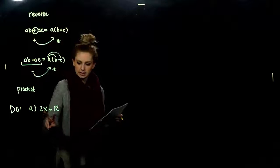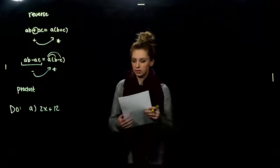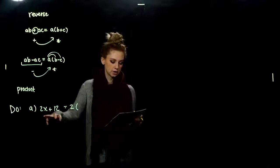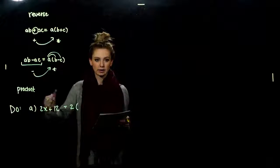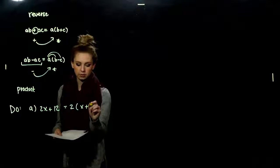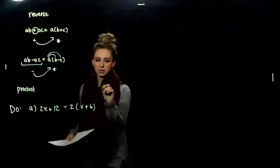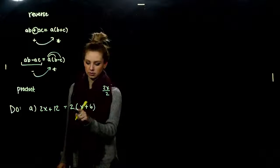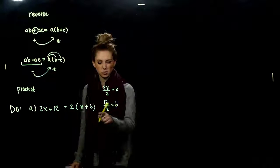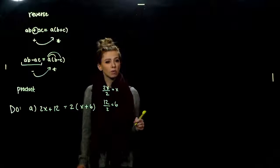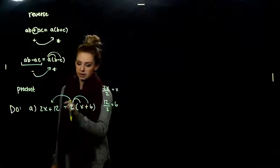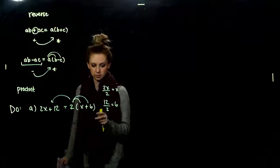To factor an expression is to find an equivalent expression that is written as a product. When things are being multiplied, we have factored. The first thing we always want to do when we factor is see if there's anything in common that we can take out of everything to make it nicer for ourselves. In the first one, is there anything in common between these two that I can take out of both? A factor of two. Two is the greatest common factor that's shared between each of them. If I take a two out of two x, what am I left with? X. And if I take a two out of twelve, what am I left with? Six.